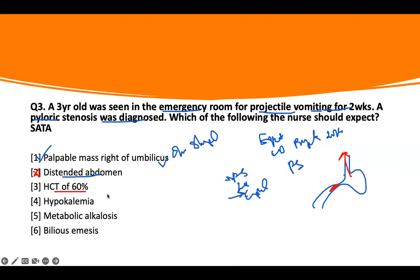Hematocrit of 60%. Remember, the kid has been vomiting for two weeks, losing a lot of fluid. The biggest problem with pyloric stenosis is dehydration. And how will this present as dehydration? They will lose a lot of fluid, so the blood will be concentrated. I have hemoglobin of 60%, which is equivalent to polycythemia vera. So this is consistent with the disease.